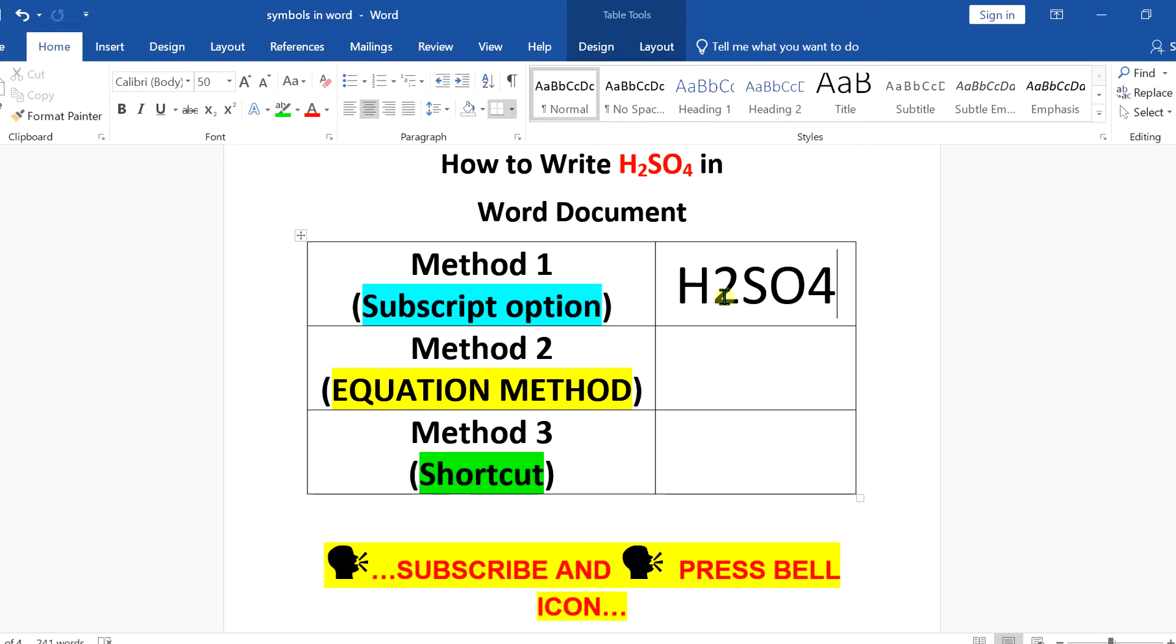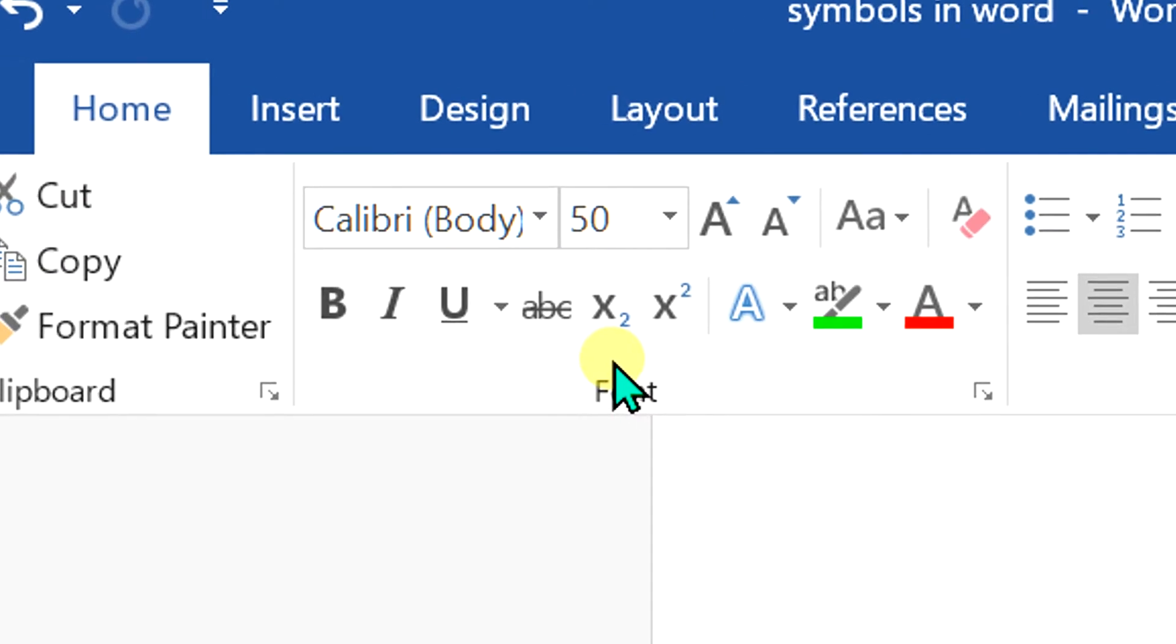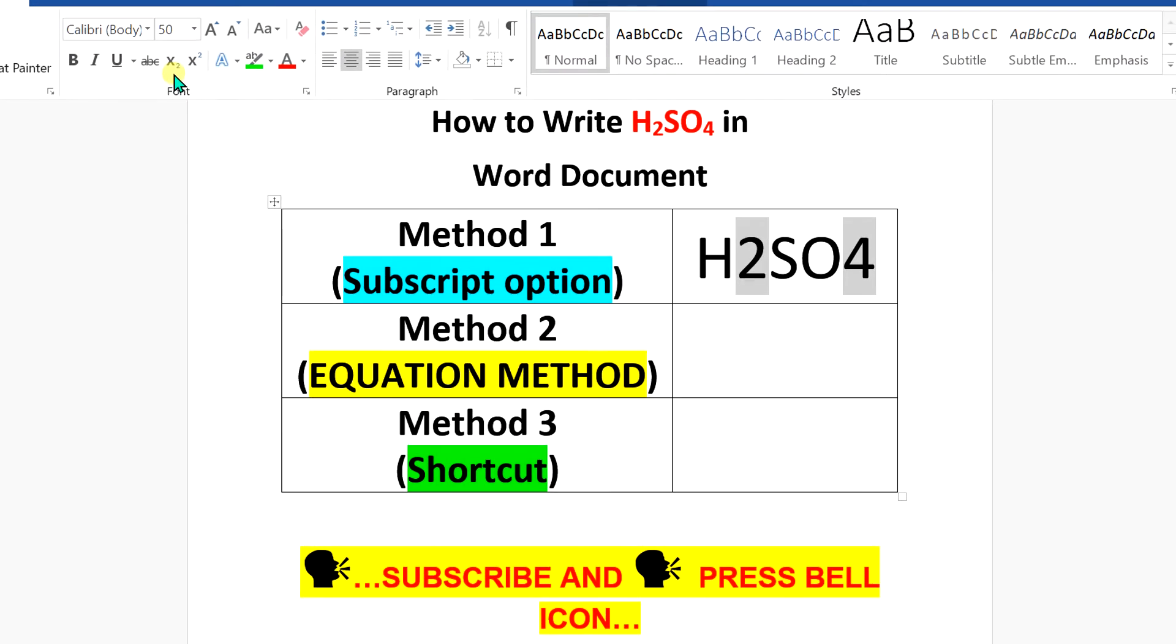In the first method, first type the H2SO4 formula. Then select the number 2, press Ctrl on your keyboard, and select the number 4. Now you will see an option X subscript 2 at the bottom, which means this is a subscript option. Click on this option and the 2 and 4 will go to subscript.